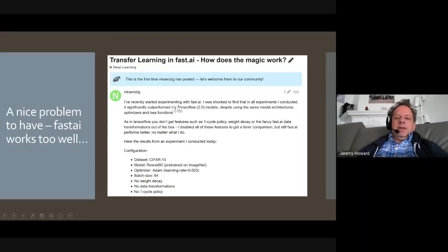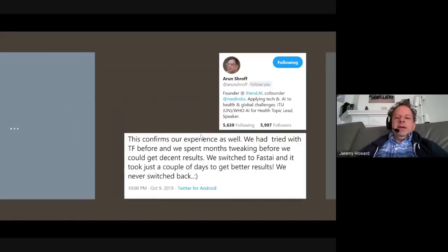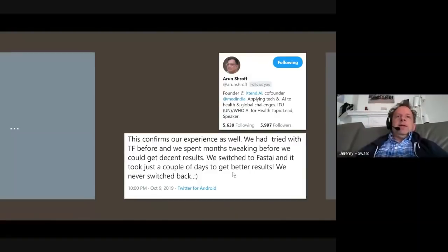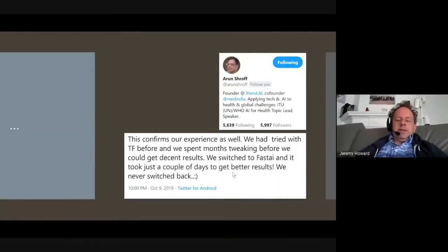And partly it's because this is based on quite a few years of research to figure out what are the best ways to solve various problems along the way. And when people actually try using FastAI, they're often surprised. So this person posted on our forum that they've been working in TF2 for a while. And for some reason they couldn't figure out all of their models are suddenly working much better. And the answer is basically they're getting all these nice kind of curated best practices. And somebody else on Twitter saw that and said, yep, we found the same thing. We were trying TensorFlow, spent months tweaking, and then we switched to FastAI. A couple of days later, we were getting better results.